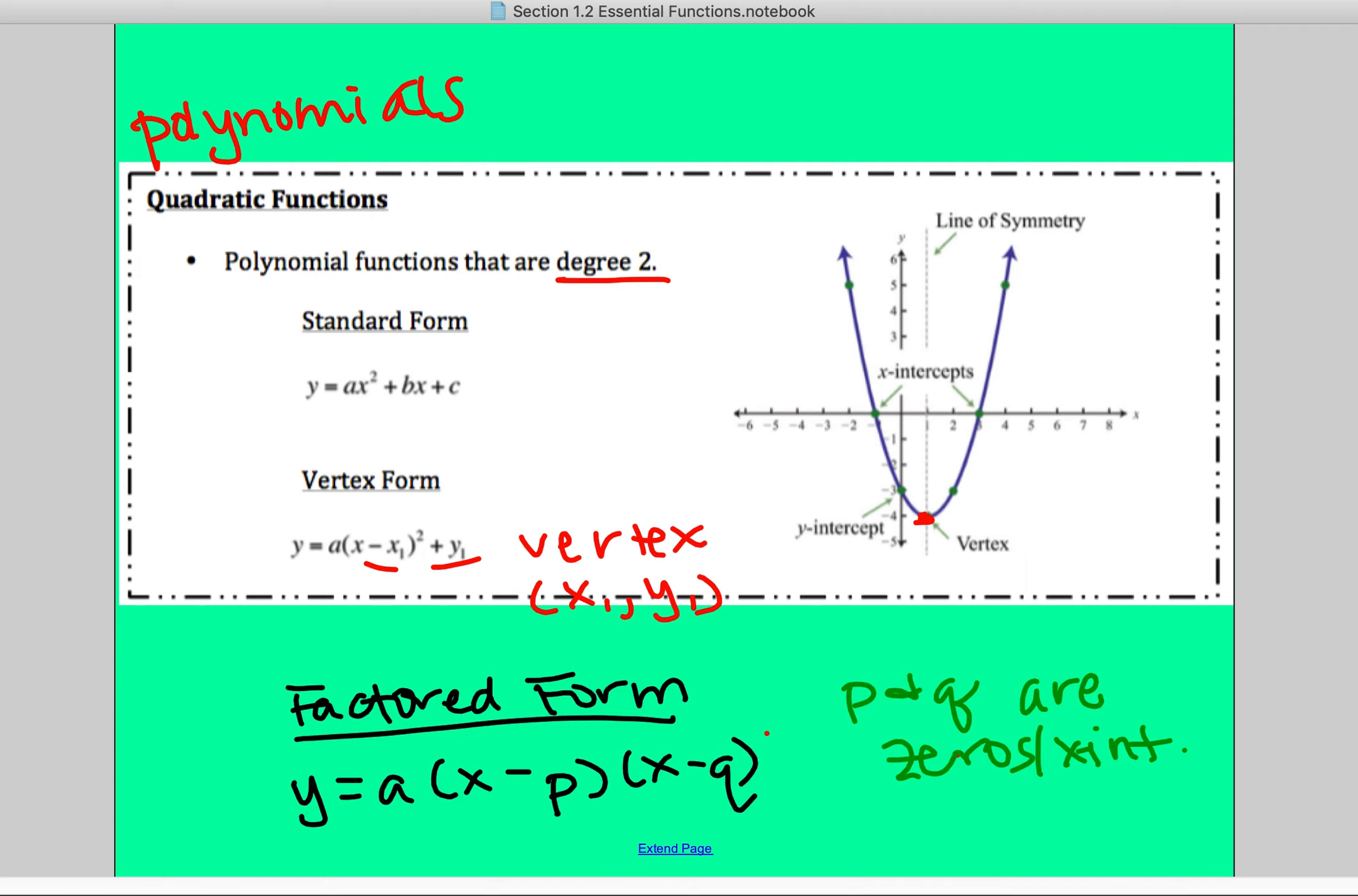One other thing about quadratics, just to kind of remind you, in order to find your line of symmetry from your standard form, the way you find that is using the equation x equals the opposite of b over 2a.